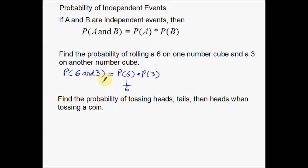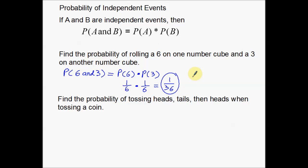On a number cube, I have the numbers one through six. So if I want the probability of rolling a six, one result is what I want — the six — out of a total of six possible outcomes. Same thing for the three: that happens one out of every six times. When I multiply these together, that's one out of thirty-six. That is my probability of rolling a six and a three at the same time with two separate cubes.